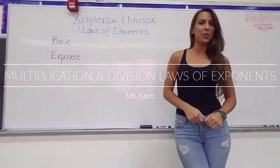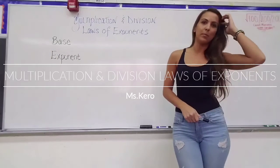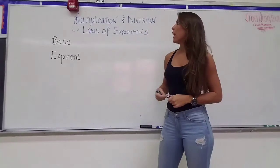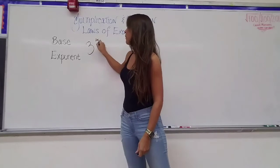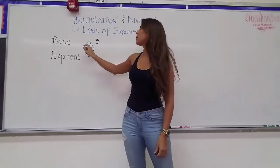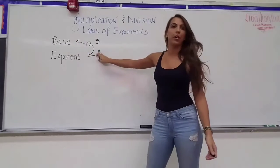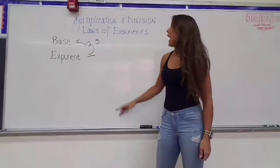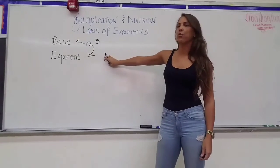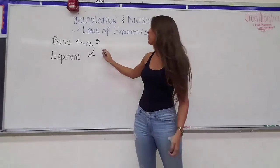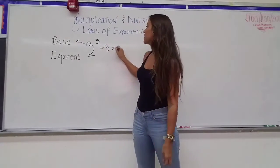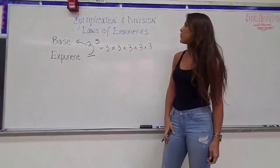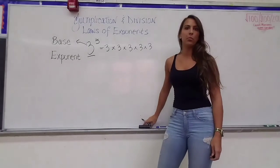Hey guys, today we're doing a lesson on the multiplication and division laws of exponents. Before we begin, let's start with some basic vocabulary: base and exponent. When I have an expression like 3 to the 5th power, the 3 is my base — it's the number or variable being raised to the exponent. The 5 is my exponent, telling me how many times I multiply 3 by itself. So 3 to the 5th power is the same as 3 times 3 times 3 times 3 times 3.